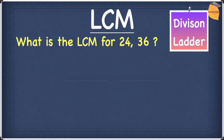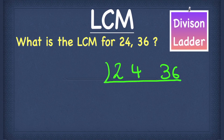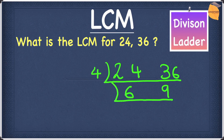Now let's look at another example. This one is: what is the LCM for twenty-four and thirty-six? Let's once again use the division ladder. The common factor for twenty-four and thirty-six is four, because twenty-four divided by four is six and thirty-six divided by four is nine. We can still see a common factor between six and nine, so we carry on. The common factor for six and nine is three: six divided by three is two, and nine divided by three is three. Since we can't find a common factor between two and three, we stop here.